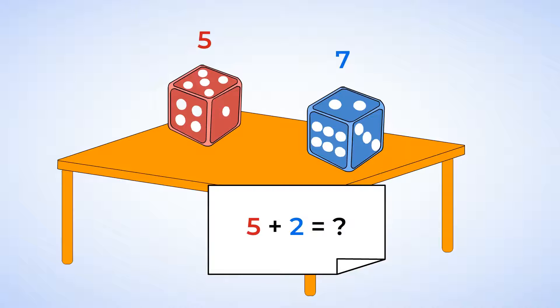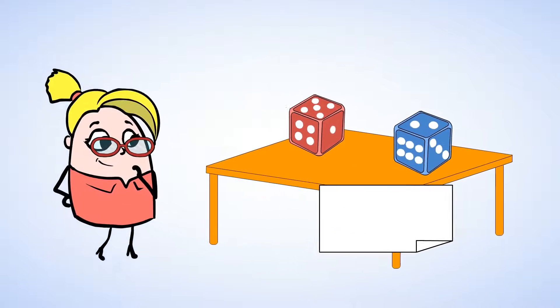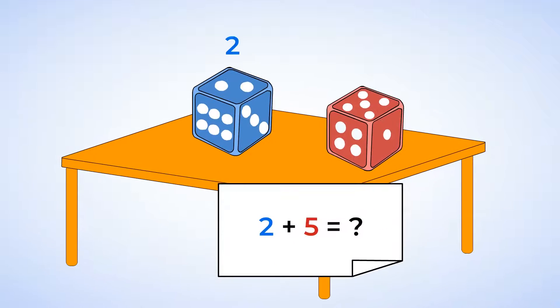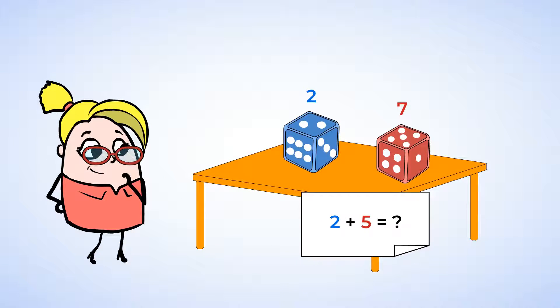Five plus two equals seven. Now, switch the order of the dice. Two plus five equals what? Let's count on, starting from two. Two, three, four, five, six, seven. Two plus five equals seven. Again, the answers are the same, even though we changed the order of the dice. Nice!